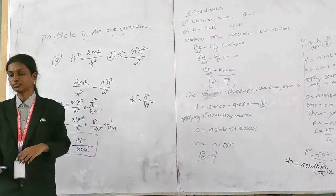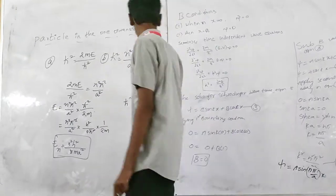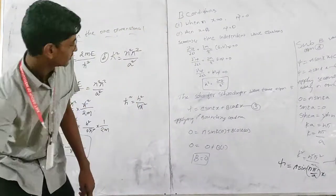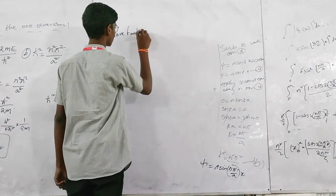So we have energy of the particle n squared by a squared in h squared by lambda squared by 1 by 2m.